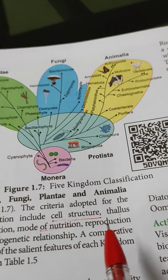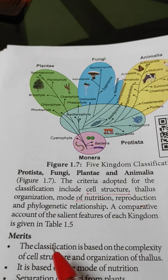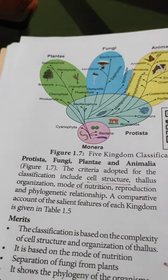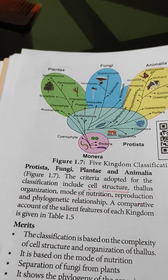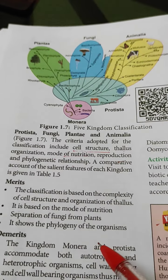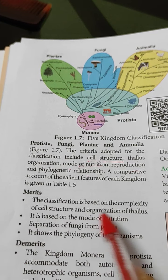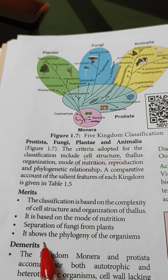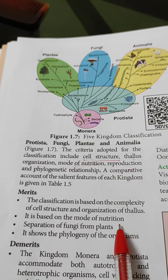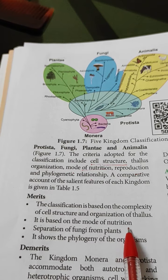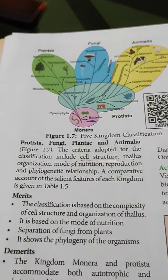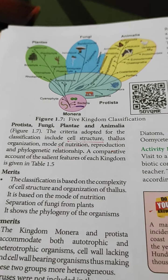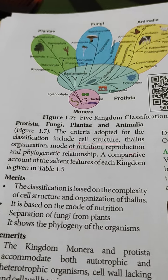In botany, it is given how these five classes differ from each other on the basis of those criteria. Now the merits — the advantages of this classification: it is based on the complexity of cell structure and organization of thallus, and based on mode of nutrition. The separation of fungi from plants is a merit, as fungi are heterotrophic, not autotrophic. It also shows the phylogeny, meaning the evolutionary relationship of organisms.